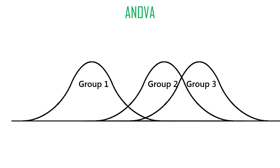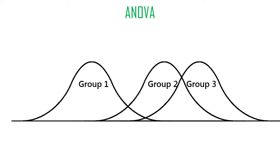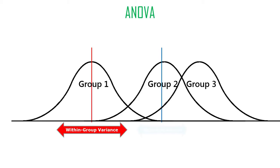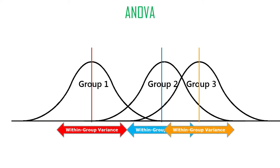So here we've got a situation where you've got three groups — group one, group two, group three. Each of them has a mean and each of them has some variance within the group. Each of these groups has a certain amount of within-groups variance. We could measure that with a standard deviation or an IQR, but we're going to use the variance because it has mathematical properties that help us build other things later. So we're going to use the within-groups variance.